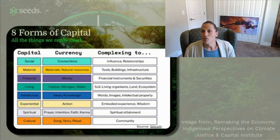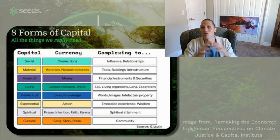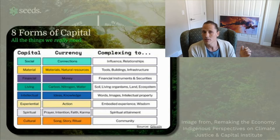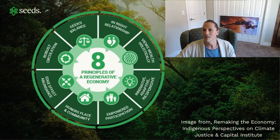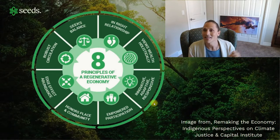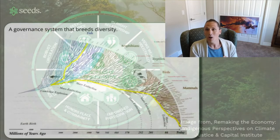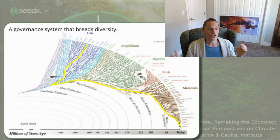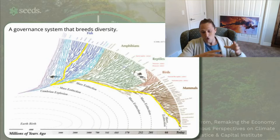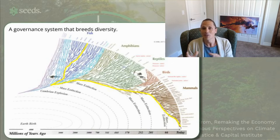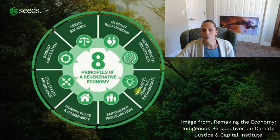The next principle is viewing wealth holistically. We'll touch on the eight forms of capital and what it means to see the world in much broader terms than just financial value. Next is being innovative, adaptive, and responsive — this is why we got so deep into governance and how we can continually evolve these tools to best meet our needs, while pushing governance out to the edges. We're trying to create governance at the lowest level possible, so the smallest number of people impacted can have the most voice in those decisions, which increases responsiveness.